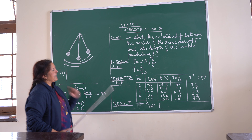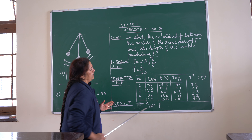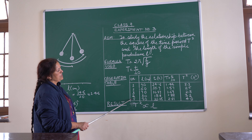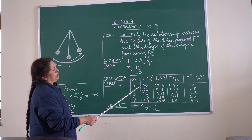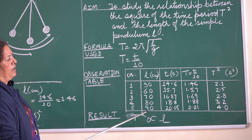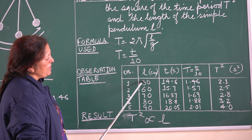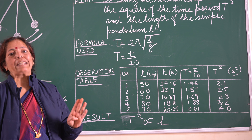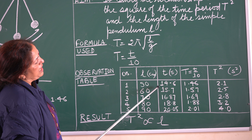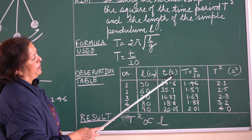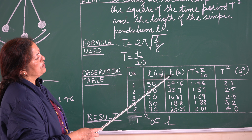For this experiment, we will use an observation table in which I have to take five different sets of observations by changing the length of the pendulum from 50 cm to 60, 70, 80, and 90 cm. I will take the 50 cm length first, make the pendulum oscillate for 10 times, and note the time down under the heading small t, recorded in seconds. Small t represents the time taken by the simple pendulum for 10 oscillations.